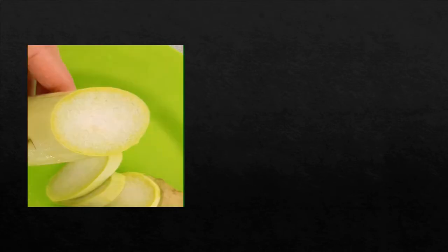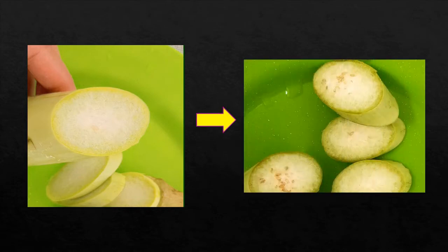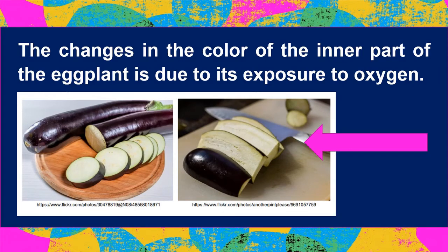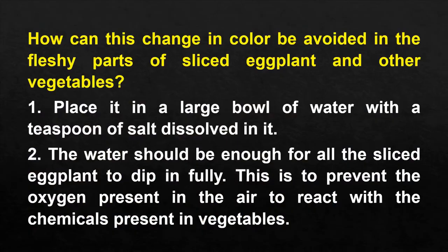Take a look at this video. After how many seconds, it turned out this way. What do you think might be the reason? The changes in the color of the inner part of the eggplant is due to its exposure to oxygen. So what should we do to avoid this? First, place it in a large bowl of water with a teaspoon of salt dissolved in it. The water should be enough for all the sliced eggplant to dip in fully. This is to prevent the oxygen present in the air from reacting with the chemicals present in the vegetables.